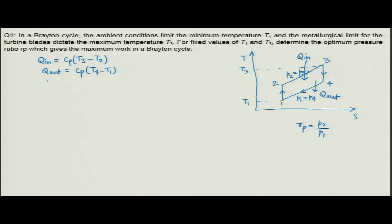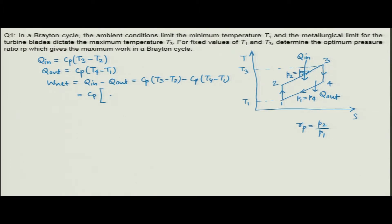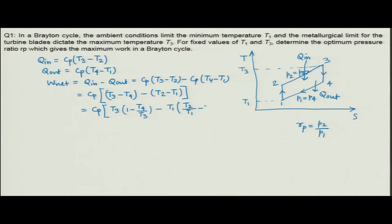The net work delivered is Q_in minus Q_out, giving Cp(T3 − T2) − Cp(T4 − T1). We are assuming constant specific heat Cp — this is the cold air standard assumption. Rearranging, we can write this as Cp[(T3 − T4) − (T2 − T1)], or equivalently Cp[T3(1 − T4/T3) − T1(T2/T1 − 1)].